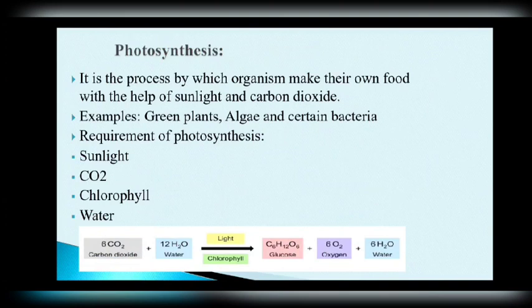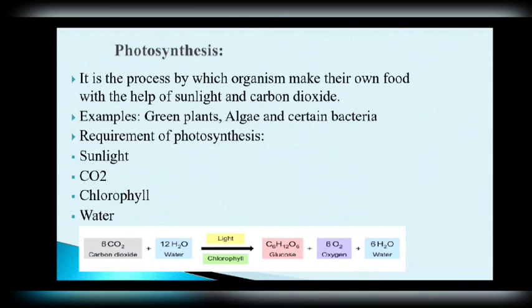Now let's discuss photosynthesis. What is photosynthesis? It is the process by which organisms make their own food with the help of sunlight and carbon dioxide. It is a type of autotrophic nutrition. For example: green plants, algae, and certain bacteria like blue-green algae, that is cyanobacteria. The main requirements of photosynthesis are sunlight, carbon dioxide, chlorophyll, and water.